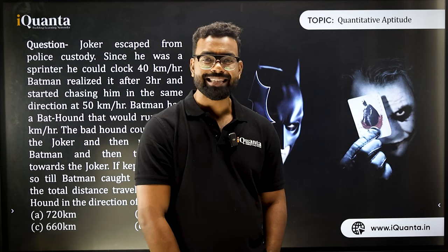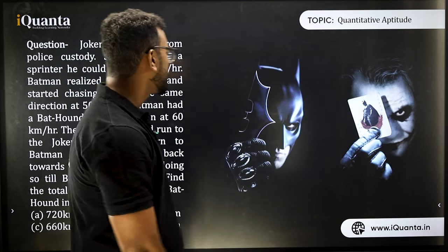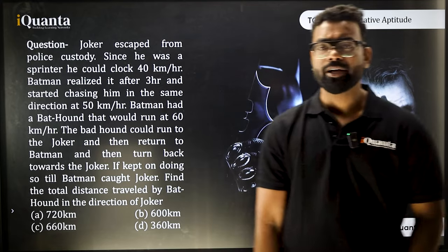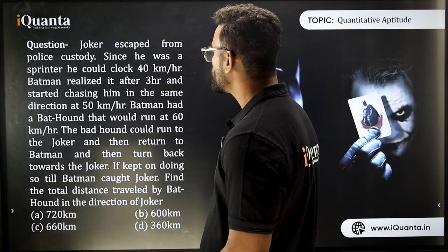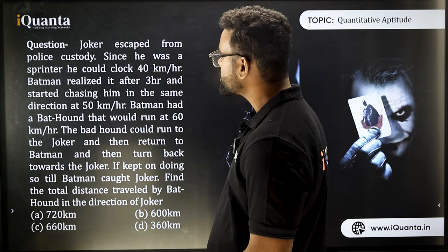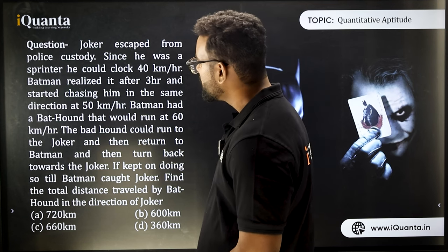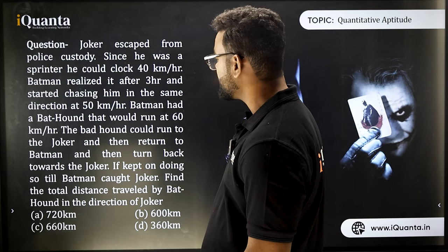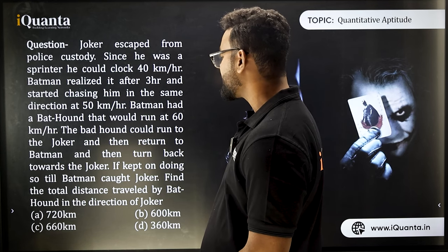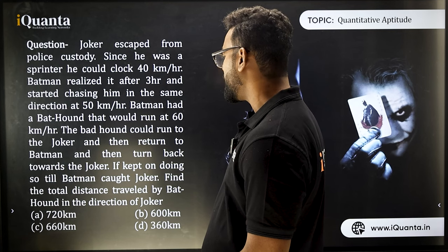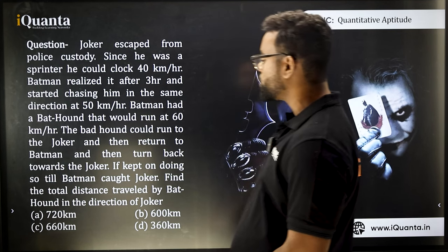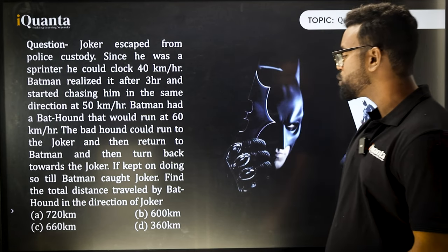Welcome to TSD Part 6. In this session we are going to discuss a continuation question — a previous year question. In this question, Joker escaped from police custody. Since he was a sprinter he could clock 40 km/h. Batman was released after three hours and chased him in the same direction at 50 km/h. Batman had a bat hound that would run at 60 km/h. The hound would run to Joker, return to Batman, then turn back towards Joker, and kept doing this until Batman caught Joker.